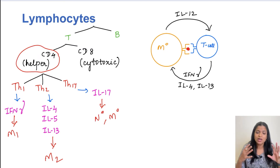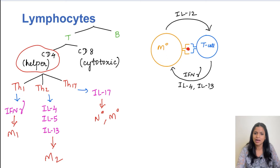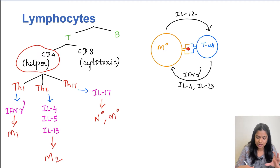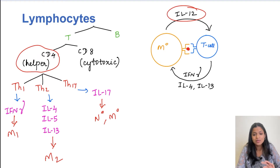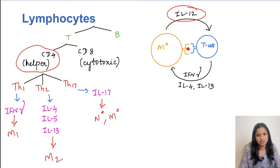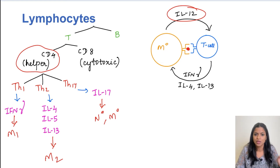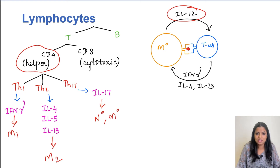There is an important link between macrophages and lymphocytes. Macrophages are antigen presenting cells — they encounter an antigen, process it, and present it to a T lymphocyte. Macrophages secrete interleukin 12, which activates T cells. The activated T cells then release cytokines like interferon gamma, which activates M1 macrophages, or interleukin 4 and 13, which activates M2 macrophages. This cycle of macrophage activating lymphocyte and lymphocyte activating macrophage is the basis of chronic inflammation.